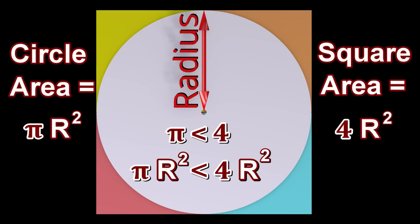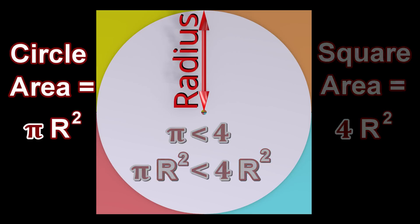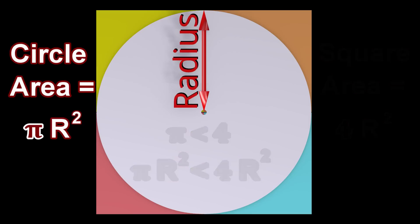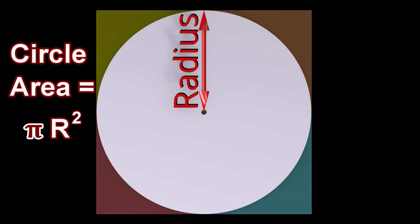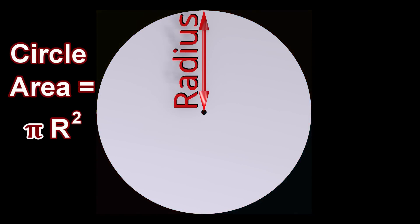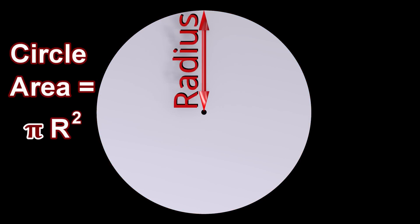But why is the area of a circle exactly equal to pi multiplied by the radius squared? Why is pi special in a way such that it appears in the equation for the area of a circle? The answer to this has to do with where the number pi comes from.